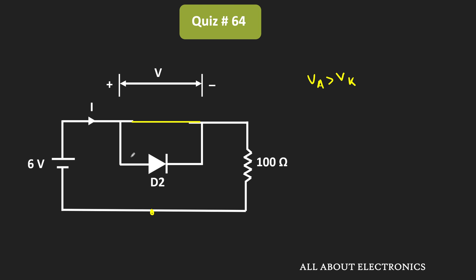This means D1 will turn on while D2 remains OFF. Since D1 is the ideal germanium diode, it will have 0Ω resistance in the forward-biased condition.